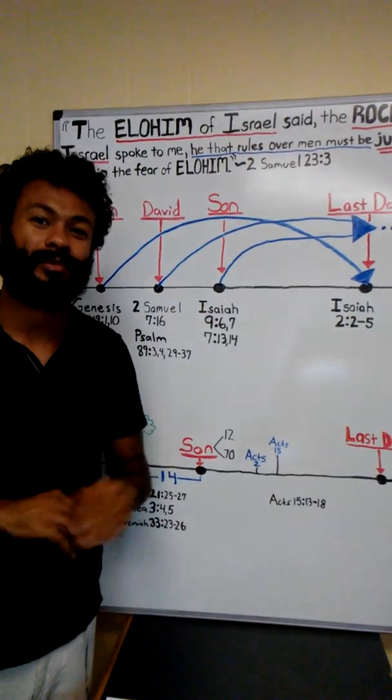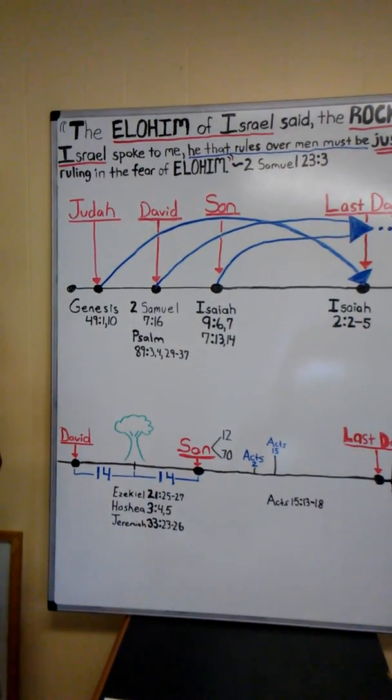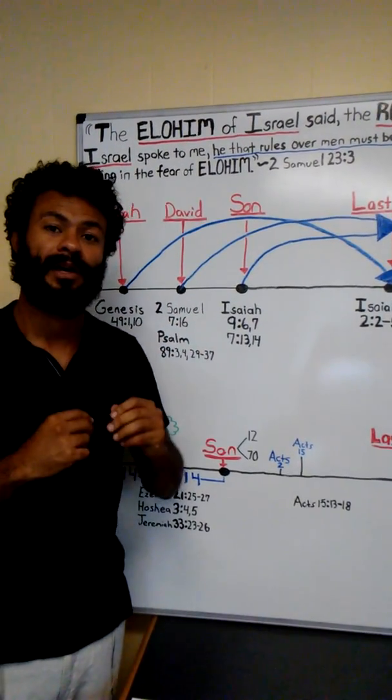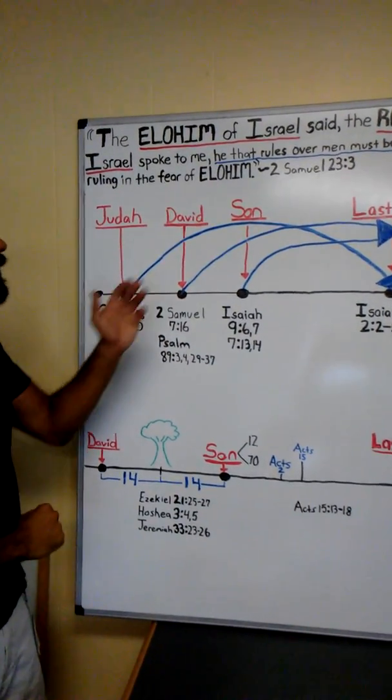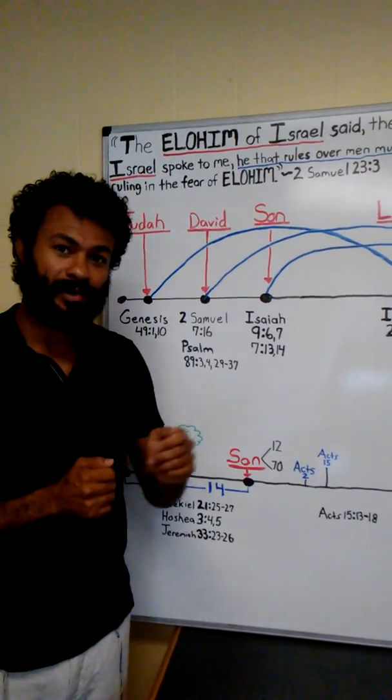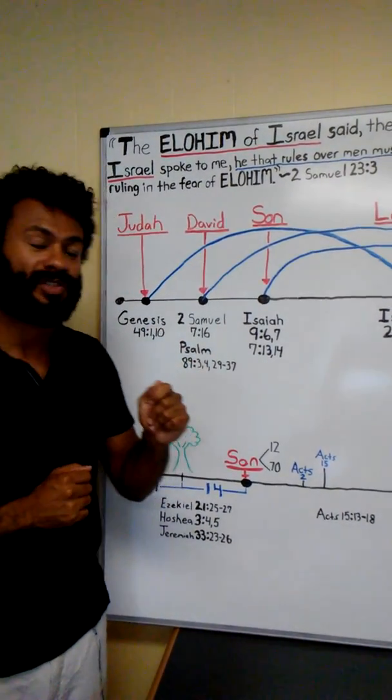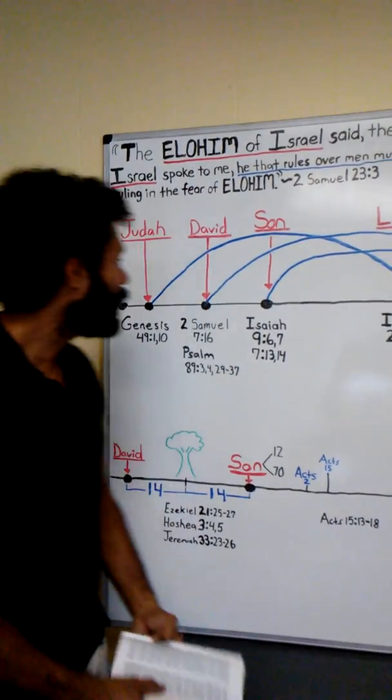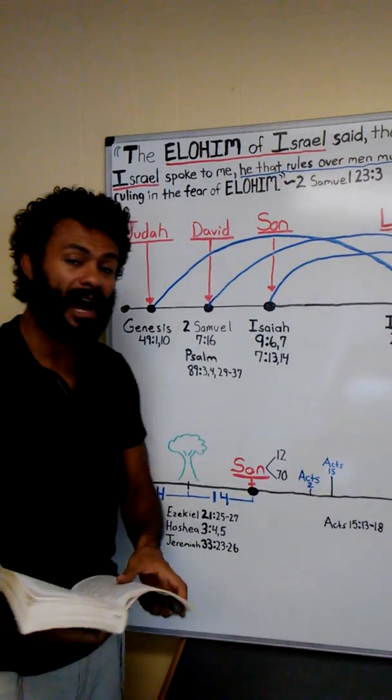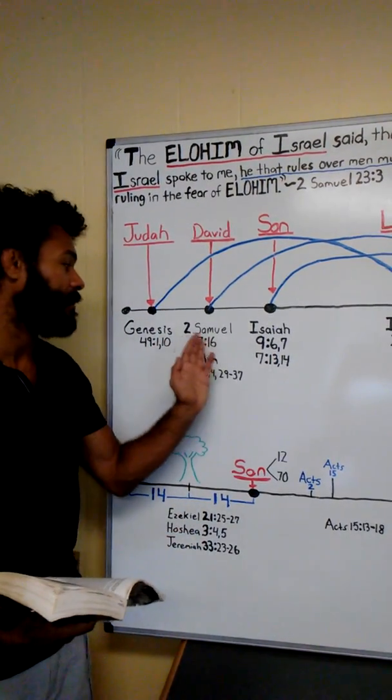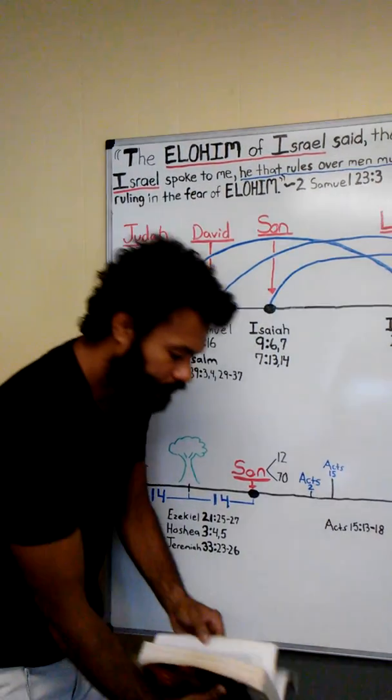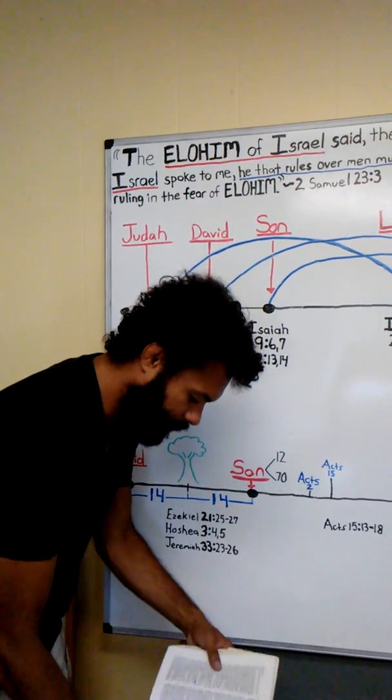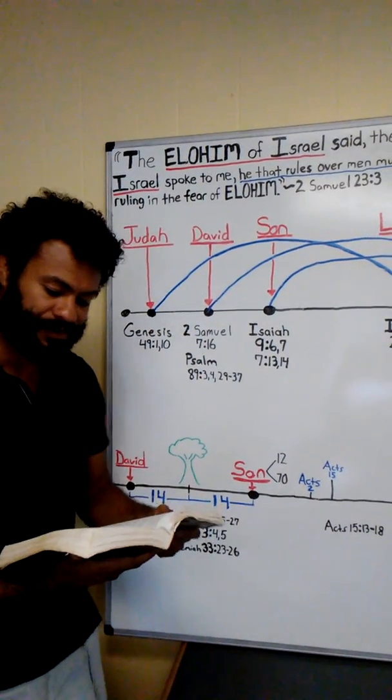From Yehudah we see that this scepter shall not depart until Shiloh comes, and when he comes, it continues through this Shiloh. The prophecies get narrower and narrower. With the tribe of Yehudah, and the family of David, we find out that this scepter or kingship belongs to a family within the tribe of Yehudah. I highly recommend reading 2 Samuel chapter 7.